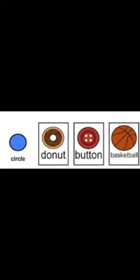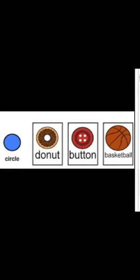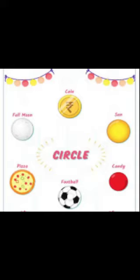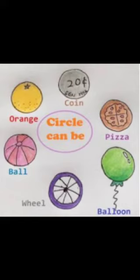In circle shape we can see objects like donuts, button — the buttons on your shirt and dresses, which are circle shape. Then we have basketball — which shape? Circle shape. We also have coin, which is circle shape. Sun is in circle shape. Candies and toffees are in circle shape. Football, basketball, pizza — pizza is in circle shape. Full moon — you can see the whole circle. Orange is also in circle shape, and wheel.